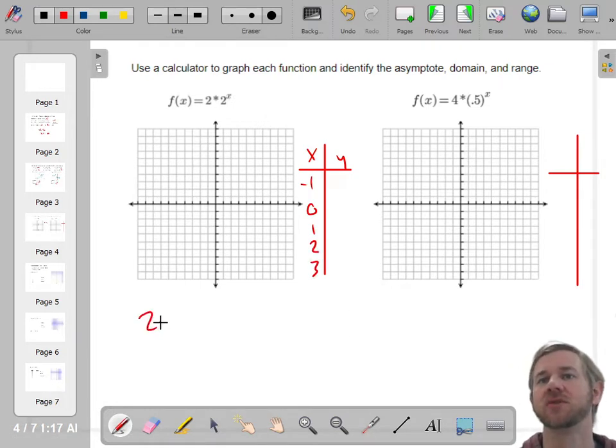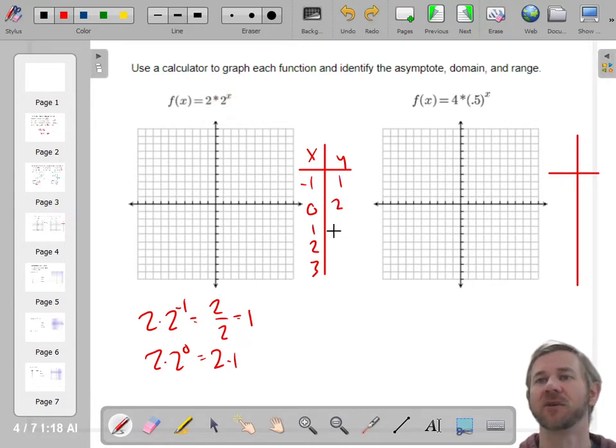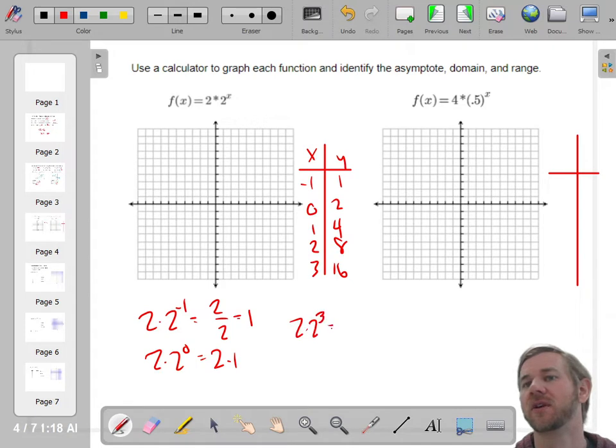Negative 1. So 2 times 2 to the negative 1st. Remember, 2 to the negative 1st is 2 to the 1st in the bottom. So that would be 1. 2 times 2 to the 0 power is 2 times 1. That would be 2. Now, hopefully you realize we're just doubling it every time. So once I've done the first 2, it's going to be 4, 8, 16 because you're just doubling the y values. That's what this is telling you. You figure out where to start. You start at 2, and then you start doubling. Let's plug 1 in to make sure. 2 times 2 to the 3rd is 2 times 8. Oh, yeah, that's 16. Cool.